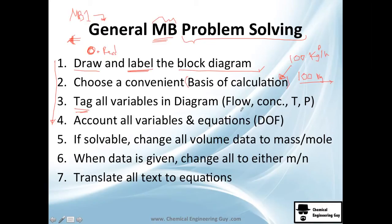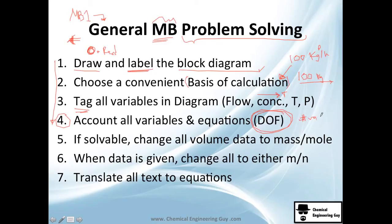Once you have all the data and variables, analyze the problem before doing the equations. Think: what do you need? What equations are required? Can we solve it right now, or do we need more data — like looking up densities? Do a degree of freedom analysis, which is essentially counting variables versus counting equations to check if it's solvable.